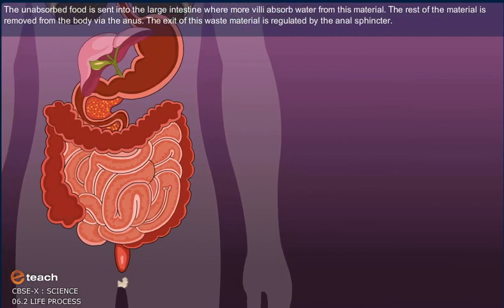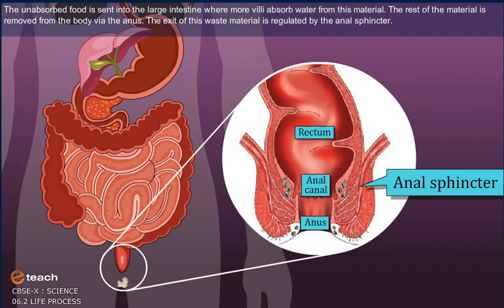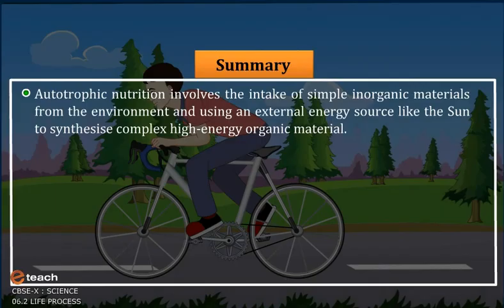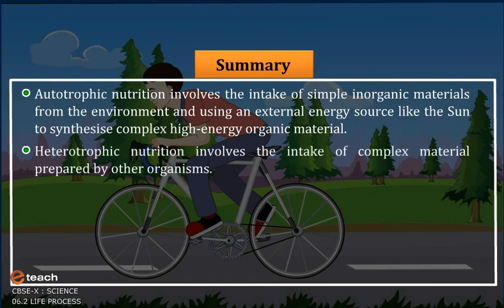Summary: Autotrophic nutrition involves the intake of simple inorganic materials from the environment and using an external energy source like the sun to synthesize complex high-energy organic material. Heterotrophic nutrition involves the intake of complex material prepared by other organisms.